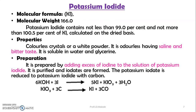Another preparation of expectorant is potassium iodide. The molecular formula is KI and the molecular weight is 166. Potassium iodide contains not less than 99% and not more than 100.5% of KI, calculated on the dry basis.